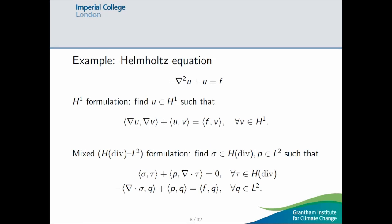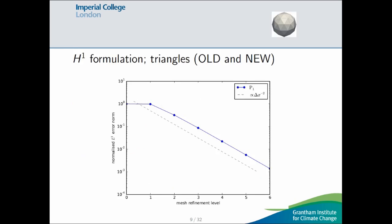My toy example, just to keep things simple, will be just a Helmholtz equation. I'll look at the two standard formulations. So, one of them is the standard H1 formulation. And the other one is this mixed formulation where you introduce an extra variable sigma. So, if you look at the H1 formulation on triangles, then... So, this is just normalized L2 error norm. Mesh refinement level, every extra refinement is halving your mesh spacing. This is with just linear elements, and the dotted line is representing second-order convergence.